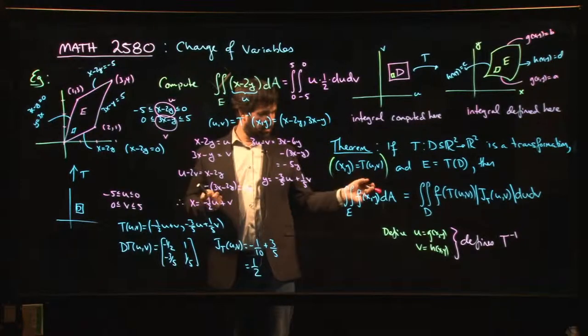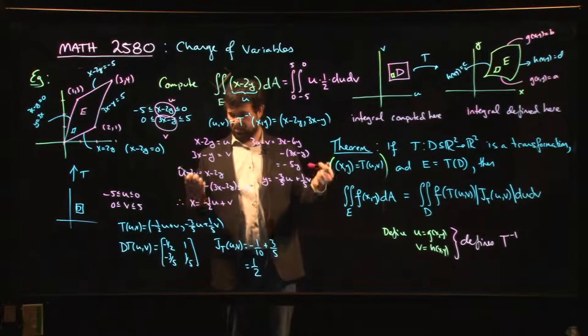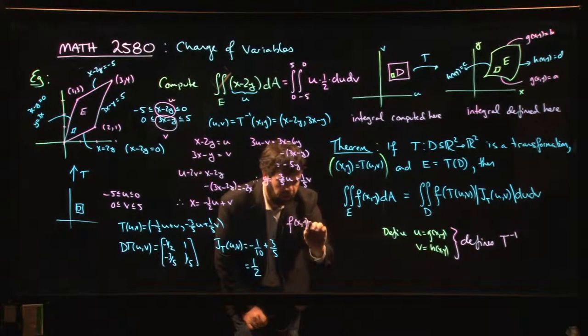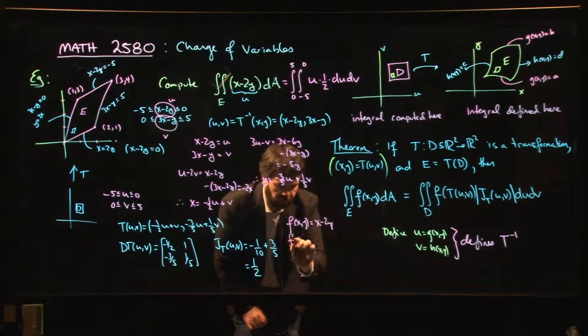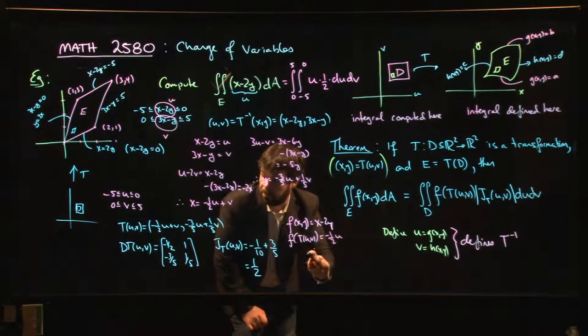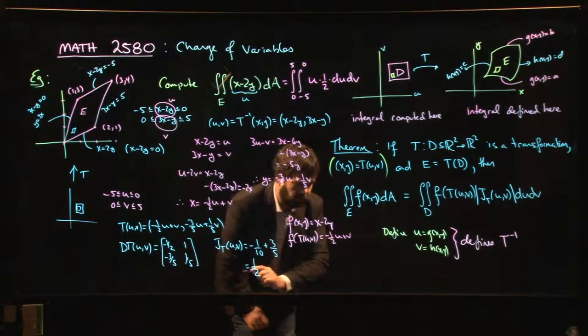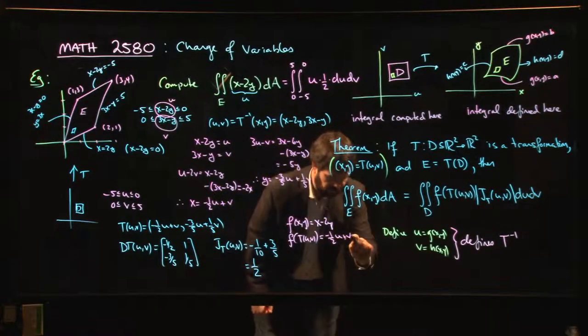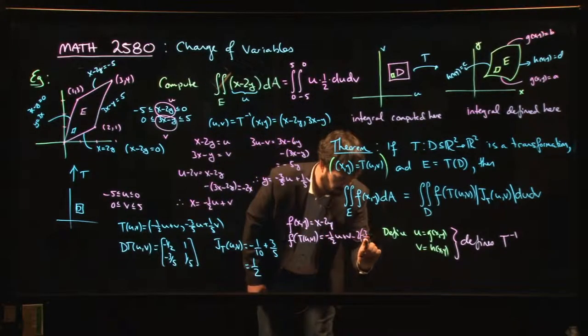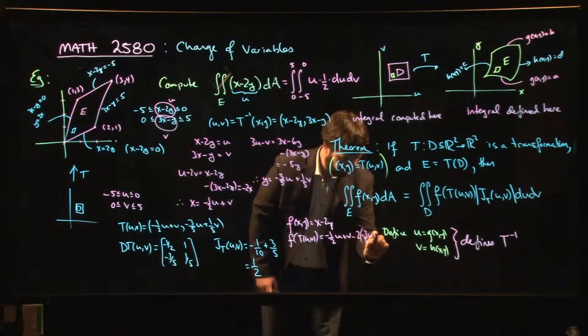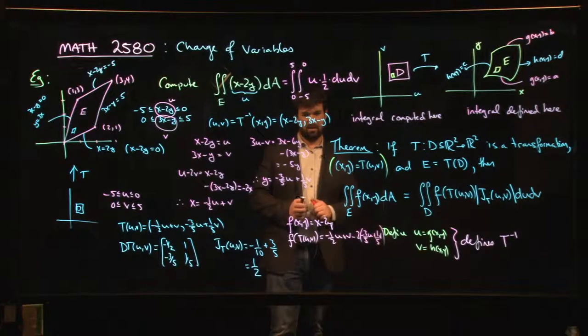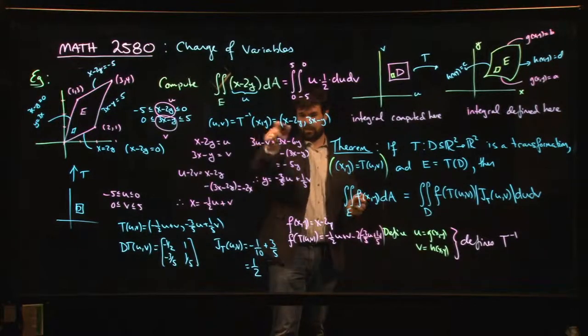One of the things you might notice is you might say, hey, shouldn't I have done this like f of T of u of v? What do I get if I actually go through it? So f of x, y was x minus 2y. So f of T of u, v should be, well, I set x equal to minus 1/5 u plus 2/5 v minus 2y. y is minus 3/5 u plus 1/5 v. Oh yeah, I totally messed it up, didn't I? Because that doesn't come out to be u. I know it should be u. It's defined there, it's u.